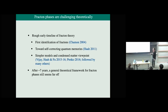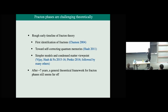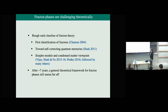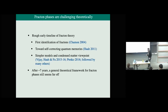Here's a rough timeline of early developments in fractons. They were first identified by Shimon way back in 2004 — and actually everybody pretty much ignored that work, not for any good reasons. It got on people's radar screen more when Haas discovered his cubic code in 2011, and then more recently in 2015 and 2016 some people — including Sagar Vijay, who's here in the audience — discovered a number of much simpler models and brought more of a condensed matter perspective to fracton physics, which really kick-started the field.